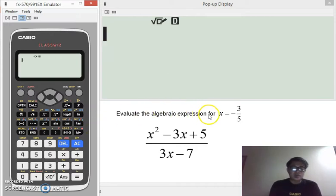Evaluate the algebraic expression for x equals negative 3 over 5, for the expression x squared minus 3x plus 5 all over 3x minus 7.